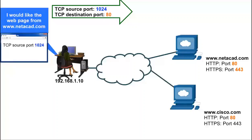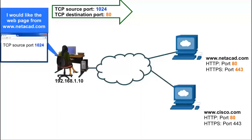In this example, the user has entered the URL www.Netacad into their web browser. The web browser is sending the information using the network application protocol HTTP, which uses the transport protocol TCP. The user's operating system has selected the TCP source port 1024 to refer to any communications coming from this specific web browser window or process.